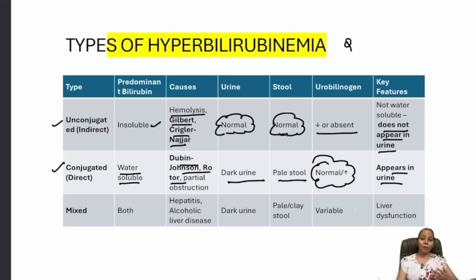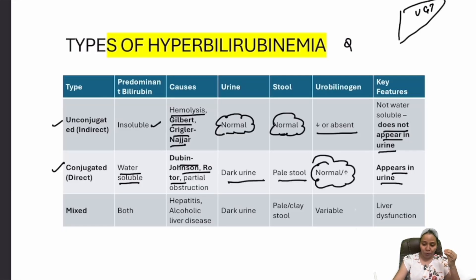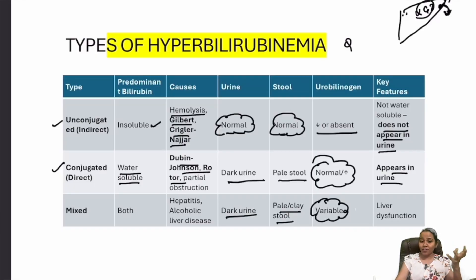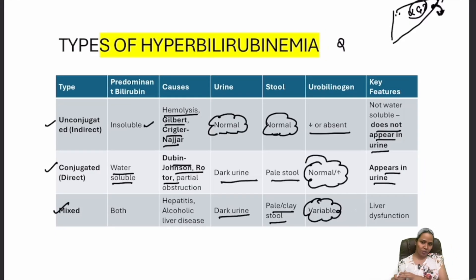Urobilinogen is mostly increased in conjugated hyperbilirubinemia because conjugated bilirubin enters the kidney, appearing in the urine — hence dark urine and pale stool. Mixed hyperbilirubinemia occurs when the liver is impaired: UGT is insufficient to convert unconjugated to conjugated bilirubin, and conjugated bilirubin also cannot be excreted. This gives dark urine and pale or clay-colored stool, with variable urobilinogen, as conjugated bilirubin refluxes back into the blood.